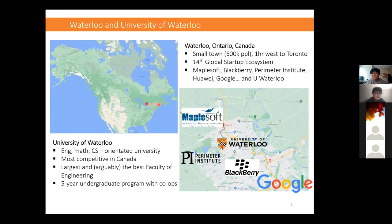Waterloo is a very strong engineering and computer science-oriented university. It's relatively new, but it's the most competitive university in Canada, and it has arguably the largest and best faculty of engineering in Canada. We have a very unique five-year undergrad program with co-ops. Essentially, the undergrad students are required to go to co-ops, and after five years of very intensive study, our students are very mature and capable. If you have an opportunity to hire our undergrads, please go for it — most of them are really good.